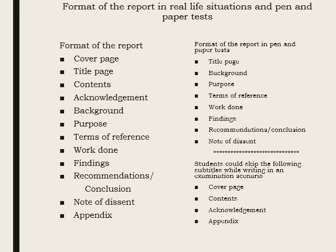Now we come to the pen-paper test scenario. When a student is expected to write a report in an examination, certain titles like cover page, contents, acknowledgement, and appendix could be skipped. Cover page is skipped because it is a repetition — the same details are given twice in cover page and title page, and from an examination point of view that repetition is not required. Contents, acknowledgement, and appendix have no relevance in an examination scenario. This is the difference between the format in real life situations and the format of a report in a pen-paper test.